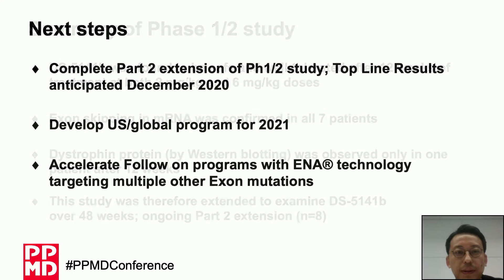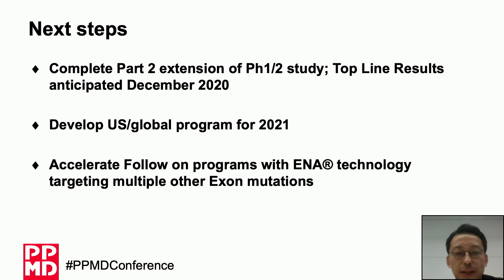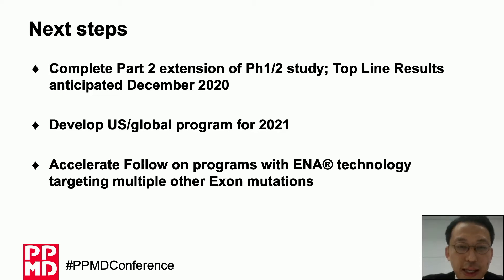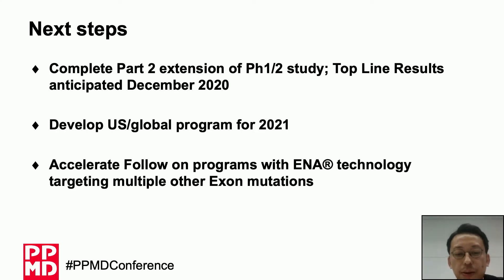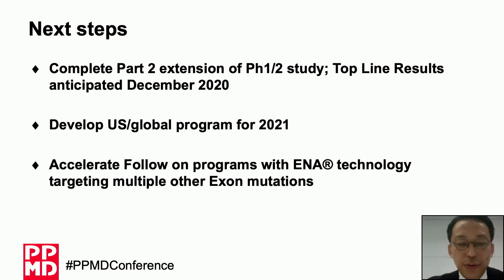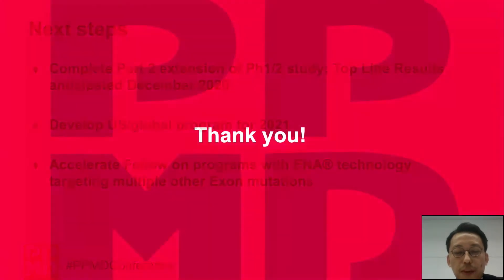Therefore, we decided to extend the study to examine DS5141B over 48 weeks, and this is ongoing. Top-line results are anticipated in December 2020, and we will develop a U.S. and global program. In addition, we have programs with ENA technology targeting multiple other exons which may be accelerated based on the full results from the ongoing clinical trial and pre-clinical studies.